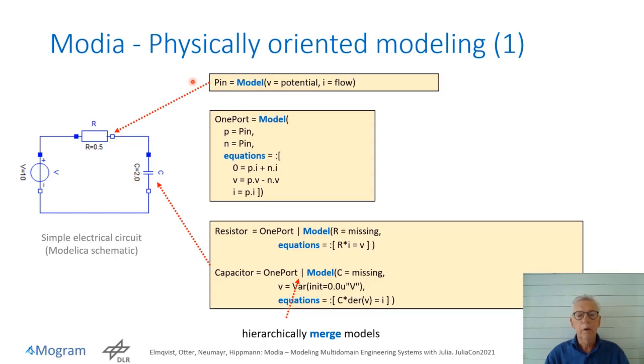Many electrical components are so-called one ports. They have two pins, in this case called P and N, and some equations. A resistor inherits one port and a model with a resistance parameter and one equation, Ohm's law. A similar thing is happening with a capacitor.